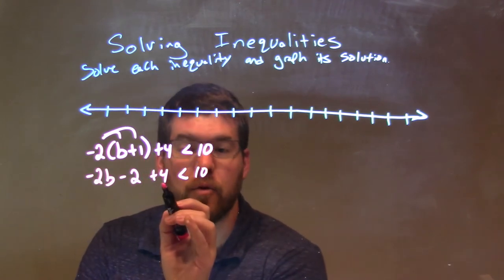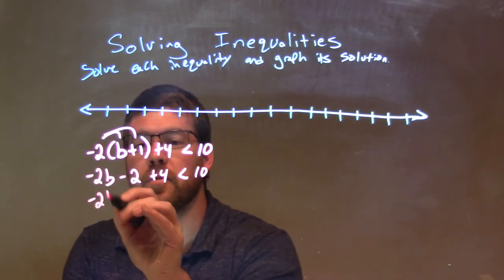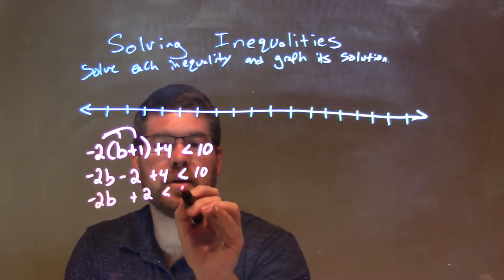Let's combine the negative 2 and positive 4 to be a positive 2. So, we have negative 2b plus 2 is less than 10.